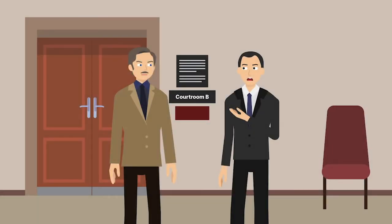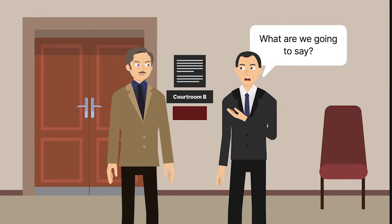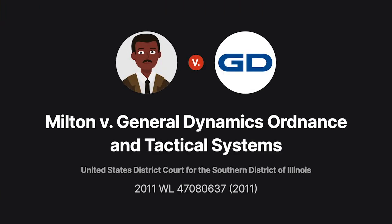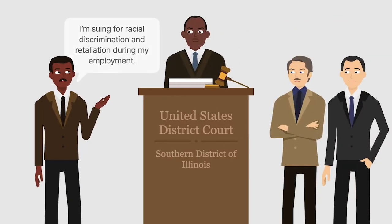What options does an answering party have in admitting or denying a complaint's allegations? A district court answered that question in Milton v. General Dynamics Ordnance and Tactical Systems. Bobby Milton sued General Dynamics Ordnance and Tactical Systems and Ira Clark for racial discrimination and retaliation that arose during Milton's employment.